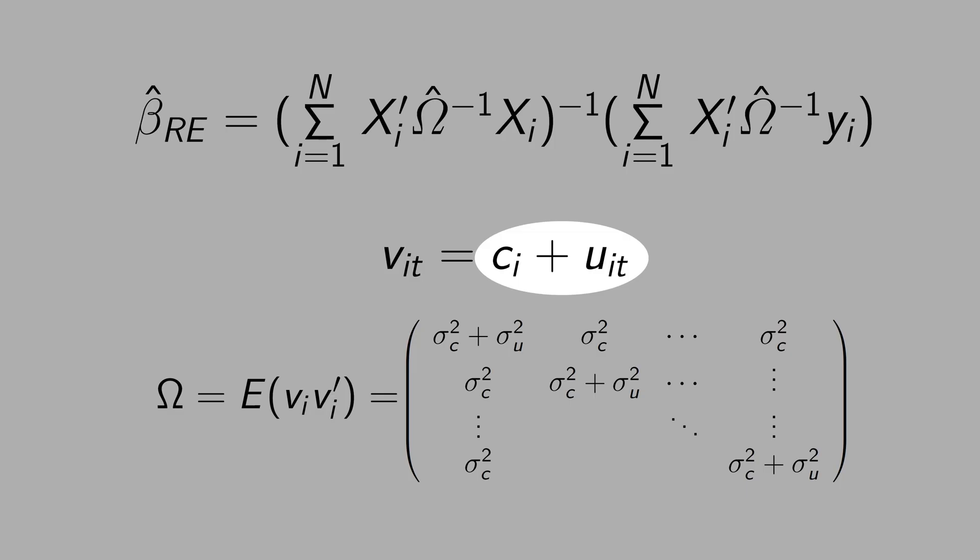You might wonder if Ci and UiT is not data like X or Y, how the computer can calculate this matrix here? After the computer runs ordinary least squares, the computer can get the UiT, the residual. You can interpret Ci as each unit of analysis i having their own intercept. That means you can put dummy variables for each i.